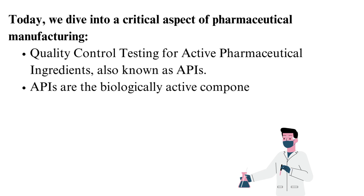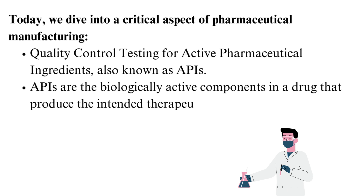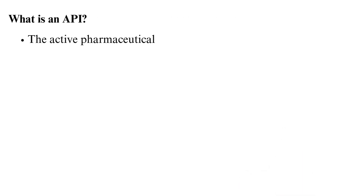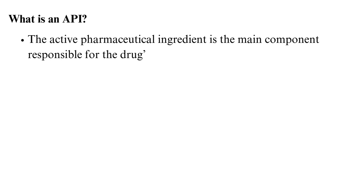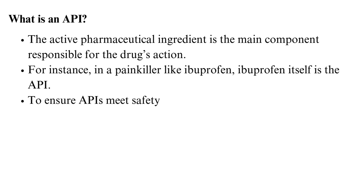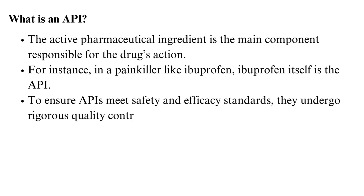APIs are the biologically active components in a drug that produce the intended therapeutic effect. Ensuring their quality is key to delivering safe and effective medications. The active pharmaceutical ingredient is the main component responsible for the drug's action. For instance, in a painkiller like ibuprofen, ibuprofen itself is the API. To ensure APIs meet safety and efficacy standards, they undergo rigorous quality control tests.